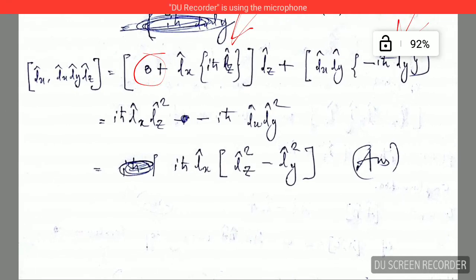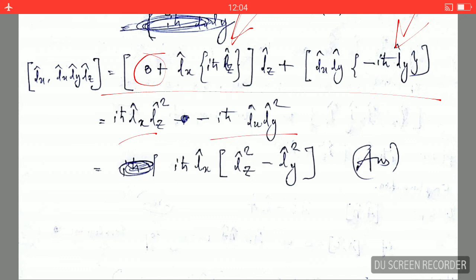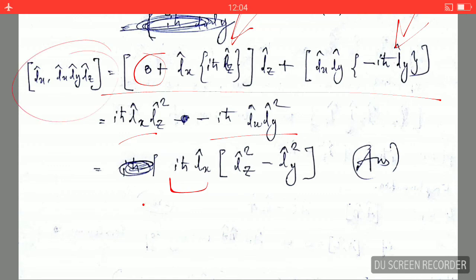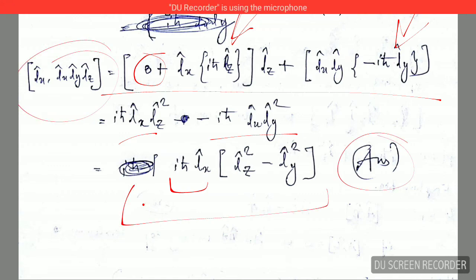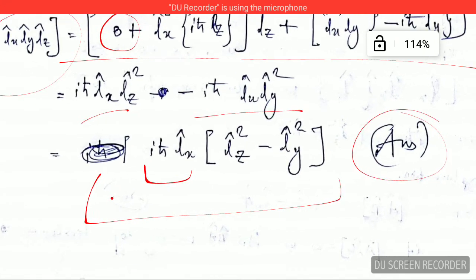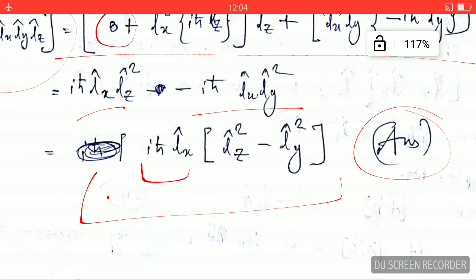With the values plugged in, I have solved it further as you can see. I have taken out this quantity outside, and the commutator then simplifies to this form — and this is our answer. Thanks for watching, friends. If you like my video, please like, subscribe, and share with your friends. Thank you very much.